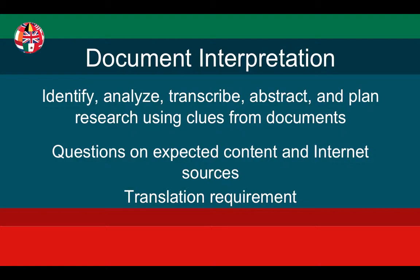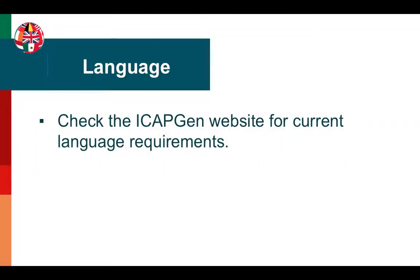Document Interpretation tests your ability to identify, analyze, transcribe, abstract, and plan research using clues from documents. There will be questions on expected content and internet sources on both sections of the Level 2 exam. Regions where the primary language is something other than English will have a translation requirement as well. In many regions, including the US and Canada, candidates must demonstrate skill in a foreign language. Check the ICAPGen website for the current language requirements in your region of interest.